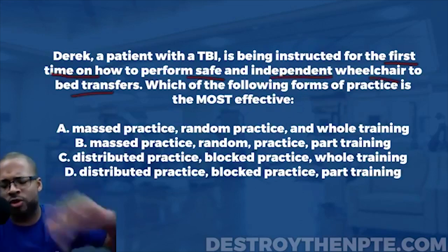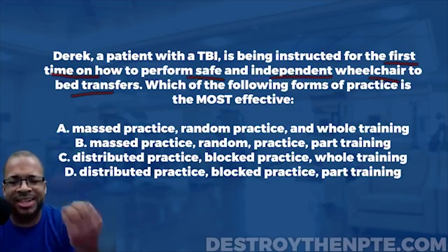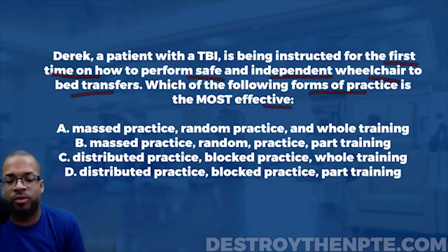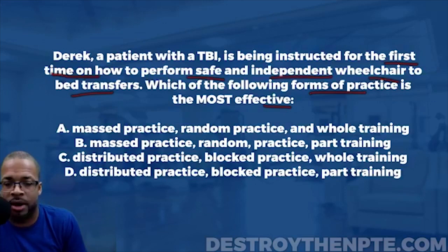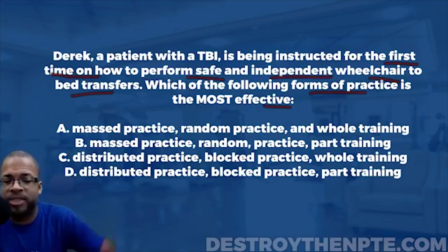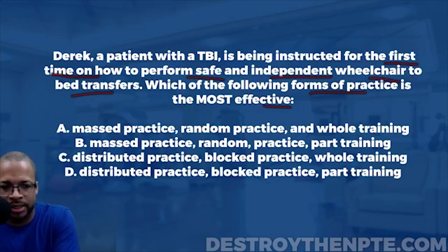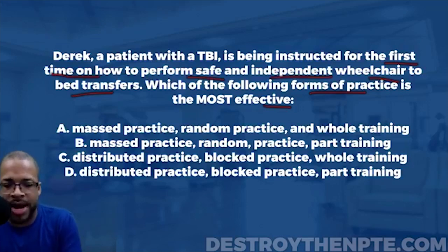That's something to keep in mind when we look at our answer choices. To get this question right, you need to understand TBI and the types of difficulties these patients may have, and you also need to understand these different types of practice and when to use one over the other. Let's run through the answer choices: A) mass practice, random practice, whole training; B) mass practice, random practice, part training; C) distributed practice, block practice, whole training; D) distributed practice, block practice, part training.